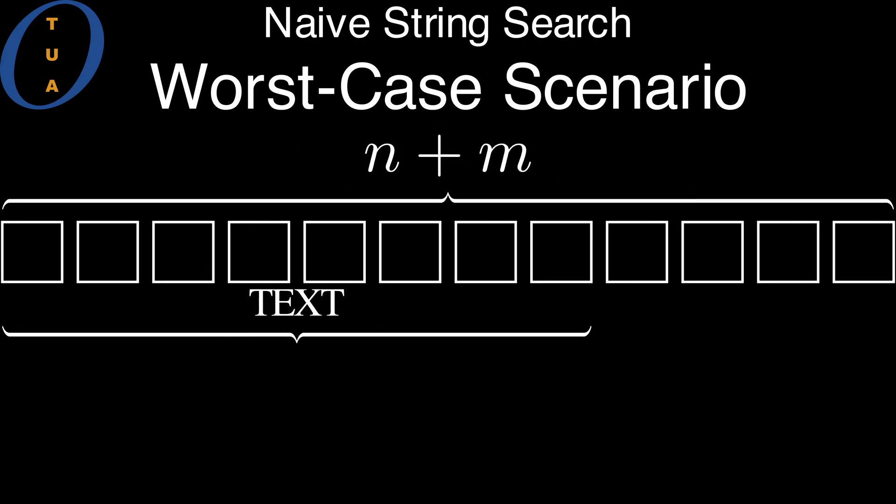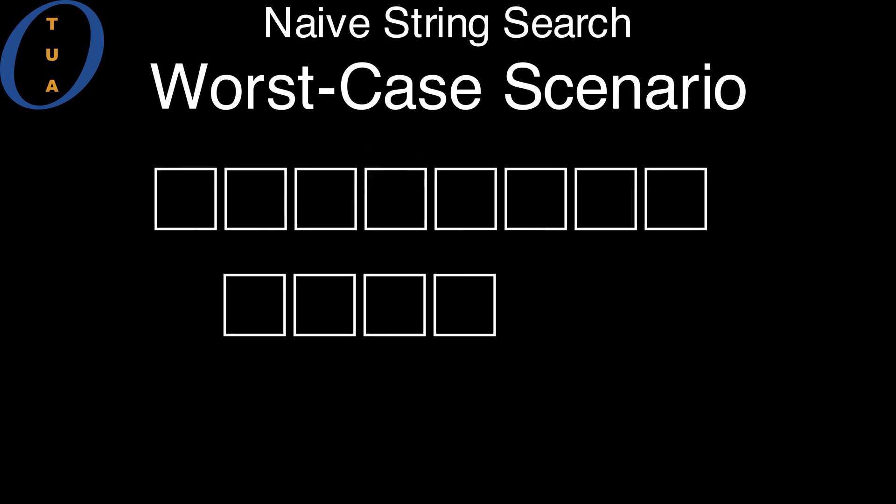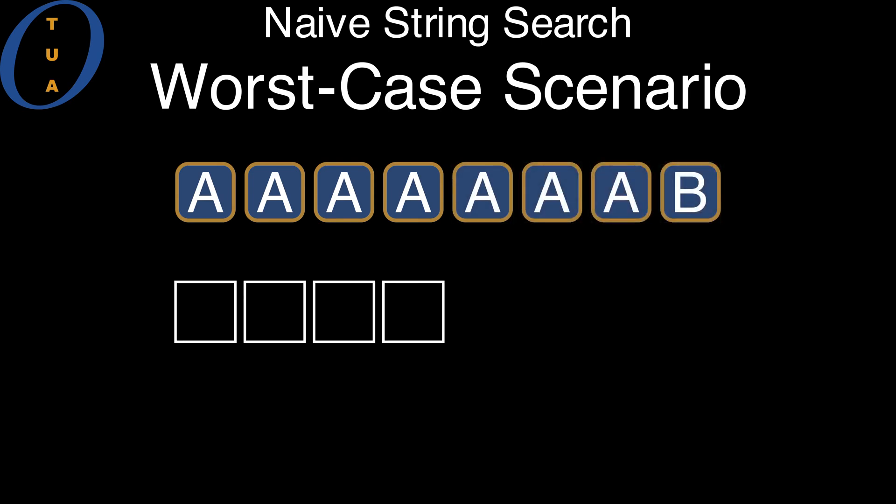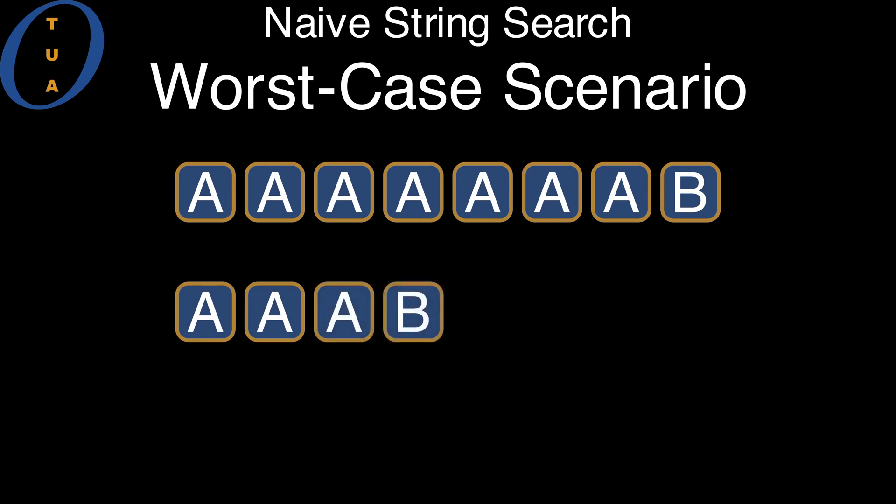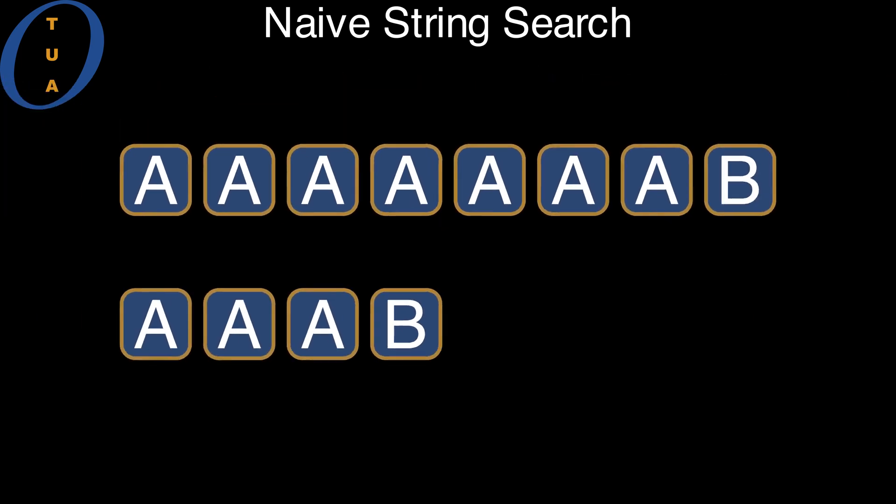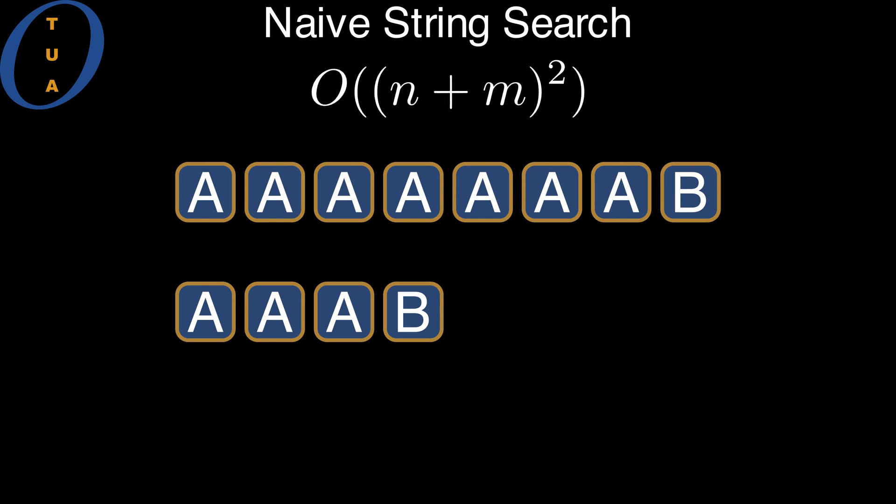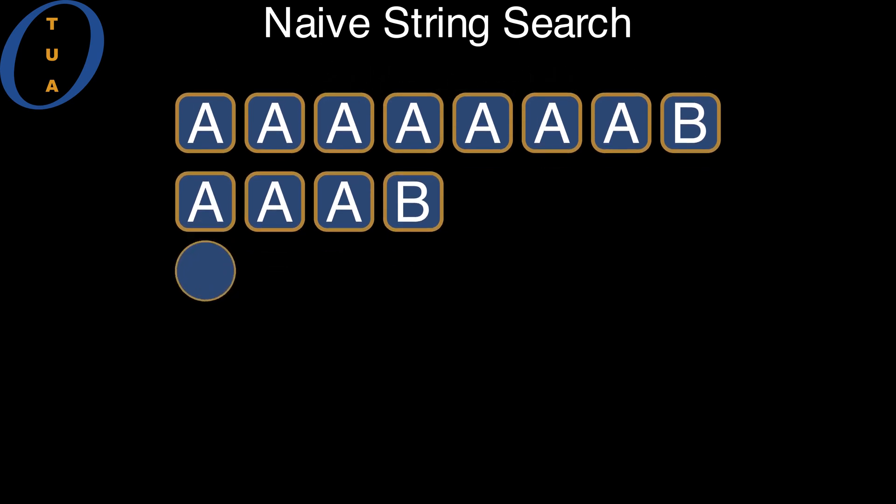We make the text consist of n minus one a's followed by a single b, and the pattern consists of m minus one a's followed by a single b. For this class of inputs, the naive algorithm runs in quadratic time. I will show this by using a simple graphical argument with tokens.